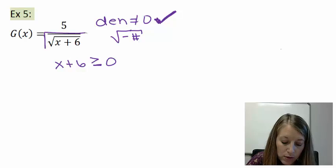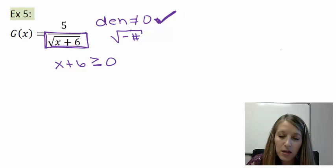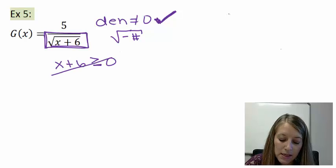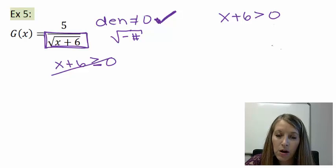So instead of me setting it up like this, I am going to set it up as x plus 6 is larger than 0. That takes care of both of my issues. The larger than, meaning my square root has to be positive.